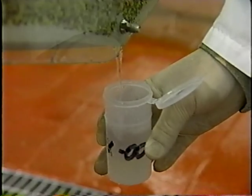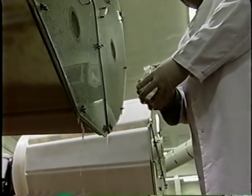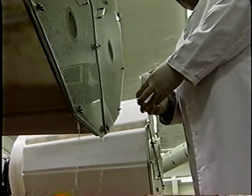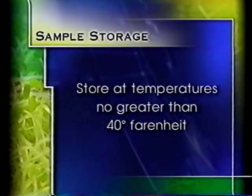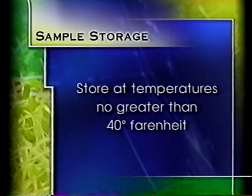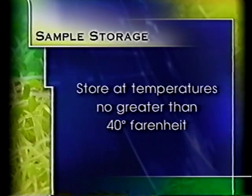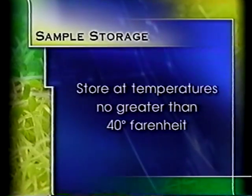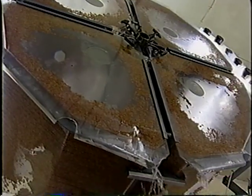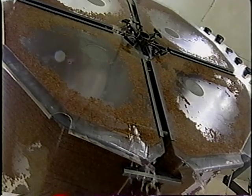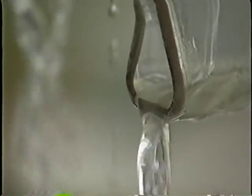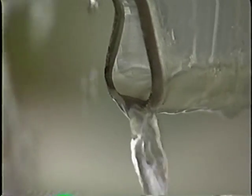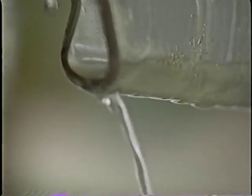Samples should be delivered to the laboratory promptly and not held for any length of time before analysis. Preferably, samples should be stored at temperatures no greater than 40 degrees Fahrenheit if analyses cannot be performed within the first two hours after sampling. A sample of spent irrigation water should be collected for each production lot or batch — at least one liter — as the water leaves the drum or trays during the irrigation cycle.